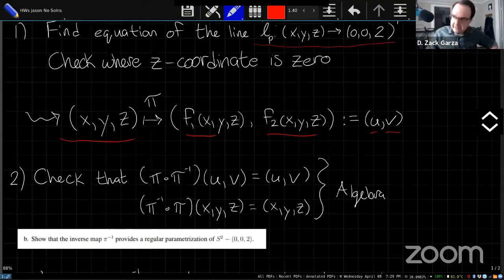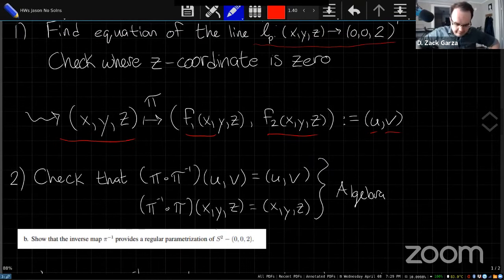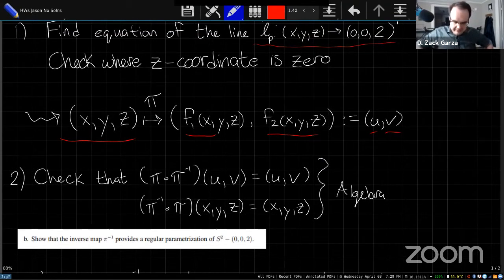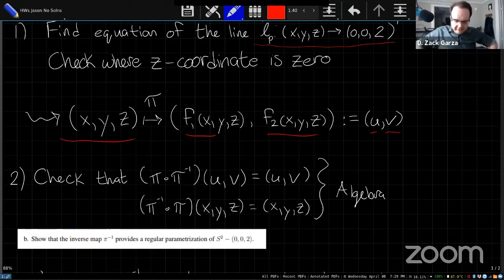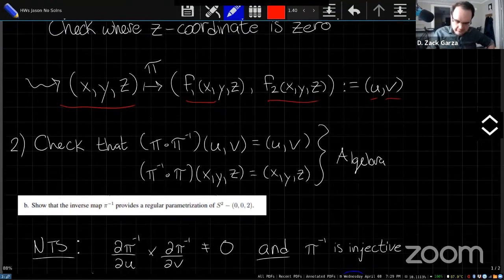And at least one way to do this, the way I would recommend going about it is just to take pi, compose pi inverse, evaluate it on a pair u, v, and just check that that gives you u, v back. And this will just be algebra. It'll be sort of a long, somewhat nasty expression, but it should simplify really nicely in the end.